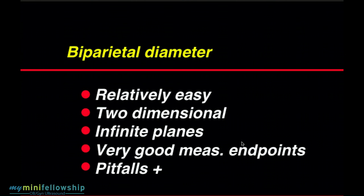Let's look at the biparietal diameter as a measurement. Again, this is a relatively easy measurement. I think of this as a two-dimensional measurement. You must get the right height on the skull, and the beam cannot be inclined. You have to be correct in two dimensions. However, once the beam intersects those two points on the fetal calvaria, you could rotate the transducer through a 360-degree arc that intersects those two points, and you would get exactly the same measurement in any of the other planes through that 360-degree arc. So we again have an infinite number of planes of section that will give us precisely the measurement we are looking for. Again, the measurement endpoints are very good. We are measuring from bone to bone.